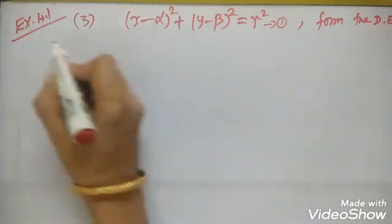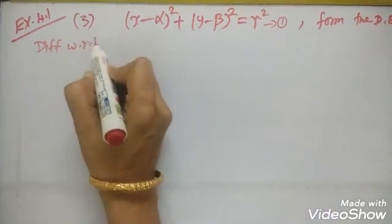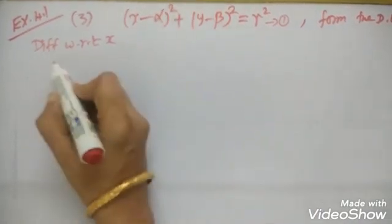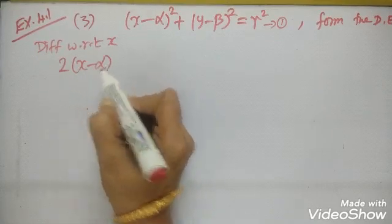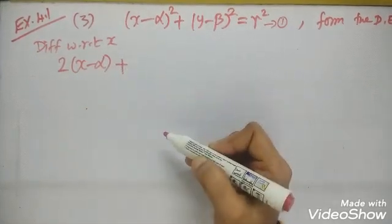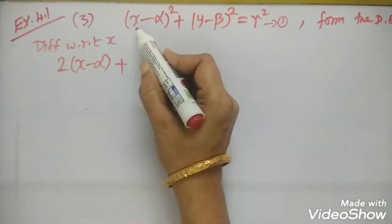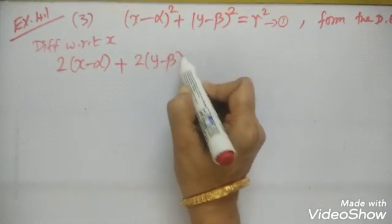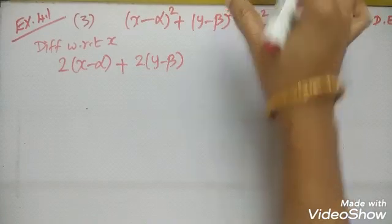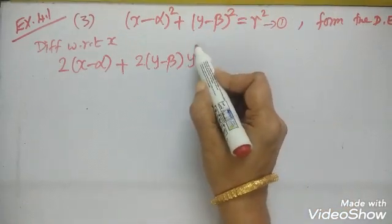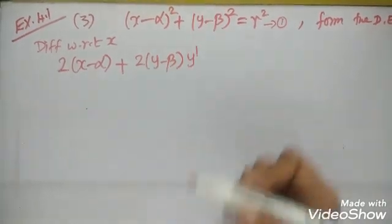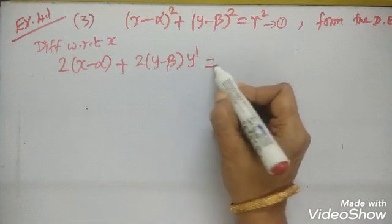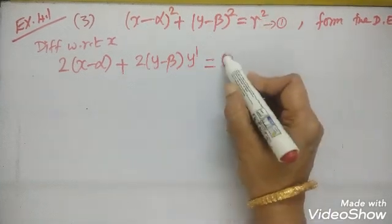Call this equation 1. Differentiate with respect to x. x squared will become 2x, so (x minus alpha) squared will become 2 into (x minus alpha). Similarly, for the y squared term — same pattern — we get 2 into (y minus beta), where y becomes dy/dx, which we can also write as y dash. r squared is a constant which becomes 0.